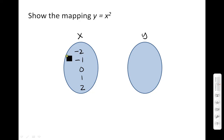Negative 2 squared. That would be negative 2 times negative 2, which gives you positive 4. So I'll draw an arrow to 4. Negative 1 squared is positive 1. So I'll draw an arrow here. 0 squared is 0.